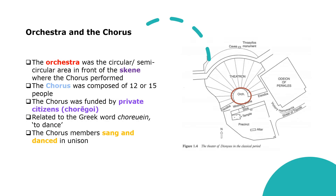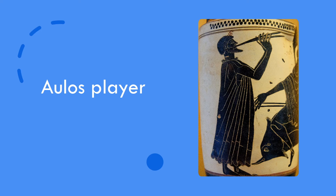Working our way forward, we come to the orchestra — the sometimes circular, sometimes semi-circular space where the chorus performed. The chorus consisted of 12 or 15 people, funded by private citizens. The chorus both sang and danced; in fact the word 'chorus' comes from the Greek word meaning 'to dance.' They were musically accompanied by an aulos player, a double-pipe instrument.